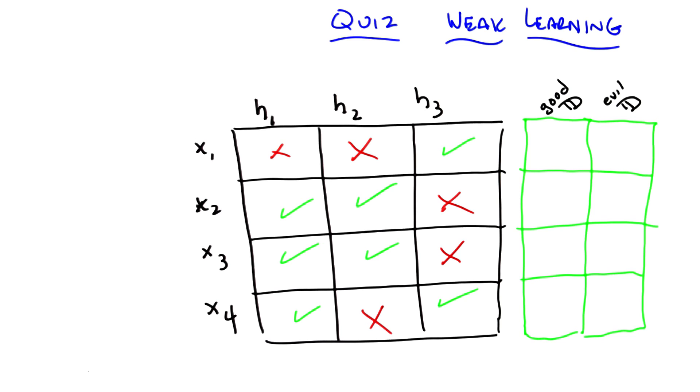Your entire instance space consists entirely of only four examples: x1, x2, x3, and x4. Got it? Got it.